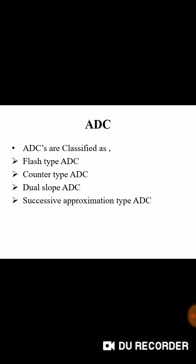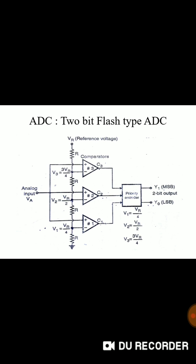ADCs are classified as flash type, counter type, dual slope, successive approximation. This is circuit diagram typical circuit diagram for 2-bit flash type ADC. The analog input is given to all the non-inverting terminals. And inverting terminals are given stage-wise input as VR upon 4, 2-VR upon 4 and 3-VR upon 4 whereas VR is a reference voltage. And output of all the comparators are given to priority encoder. Priority encoder is going to be a digital valued output.